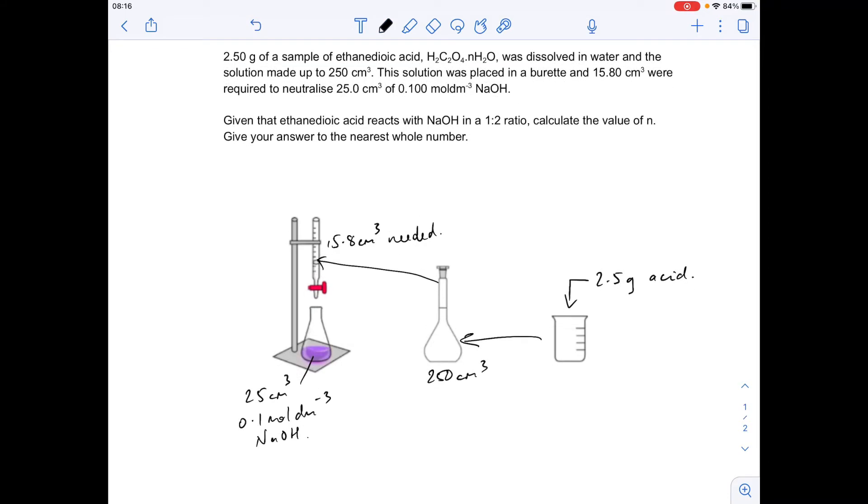Okay, so the first thing we can do is work out the moles of sodium hydroxide that we used in the titration because we know the concentration and volume. So that's going to be 0.1 concentration multiplied by the volume, but remember that's got to be in dm³, so that comes out at 2.5 × 10⁻³ moles of sodium hydroxide.